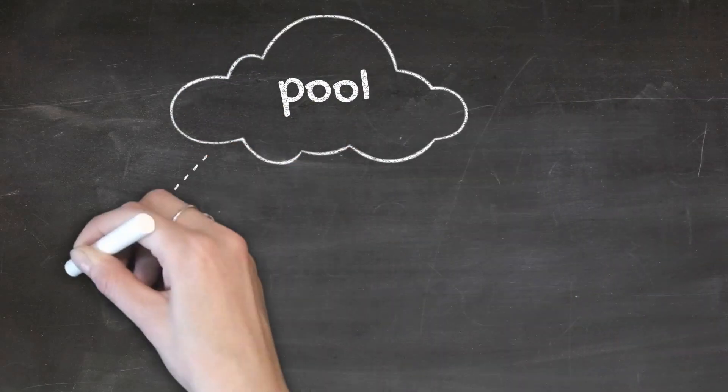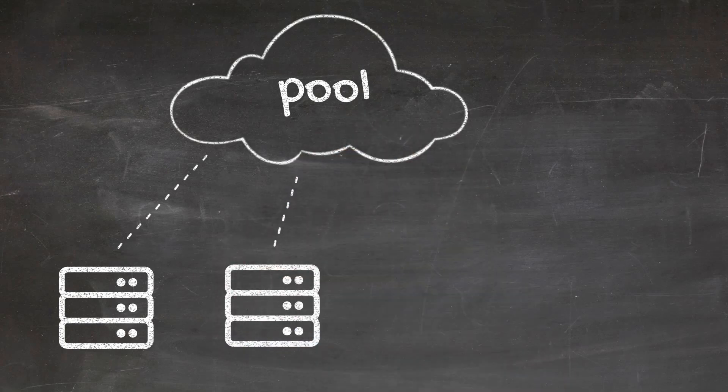By adding their computing power to the pool, they increase the pool's chances to find a new block. And if successful, they'll get their cut proportional to their computing power.